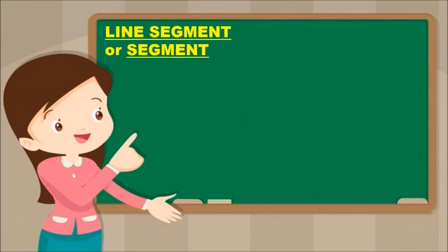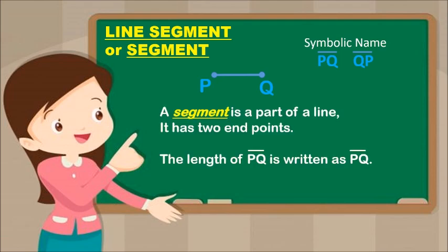Next is Line Segment, or Segment. As you can see in the figure, Line Segment PQ. Its symbolic name is Line PQ. A segment is a part of a line. It has two endpoints. The length of Line Segment PQ is also discussed.